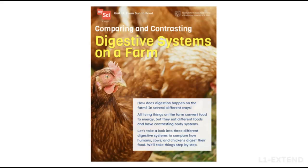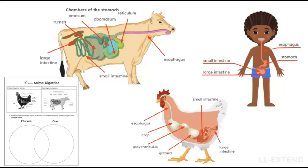The extend activity for this lesson is aligned to a Missouri standard. If you are a Missouri teacher, this lesson should be taught; if not, it can be optional. After asking some initial questions about animal digestion, you'll provide students with the article Comparing and Contrasting Digestive Systems on a Farm and allow them to read with a partner and annotate the article. You'll display slides showing the digestive system of a cow, chicken, and human and review the fast facts. Then you'll have students return to their groups or pairs and answer the questions on the Animal Digestion Student Journal page.